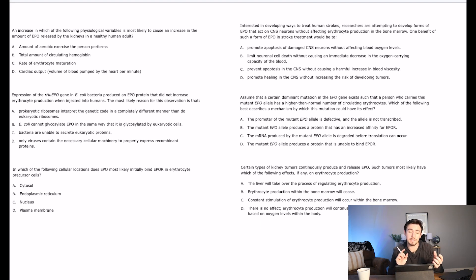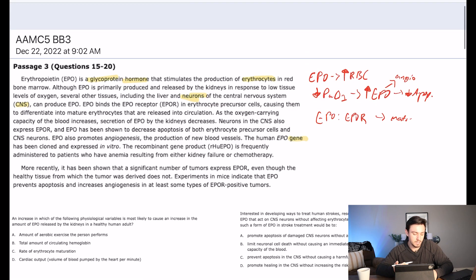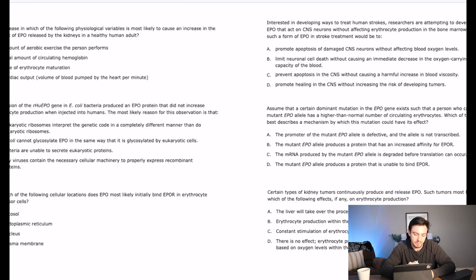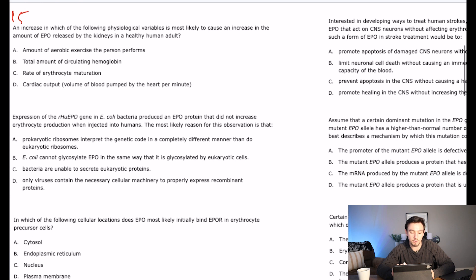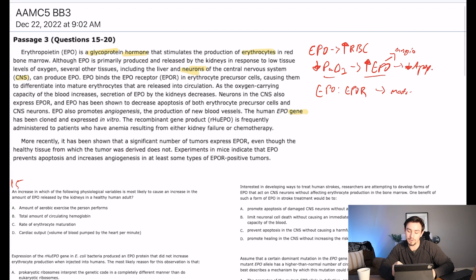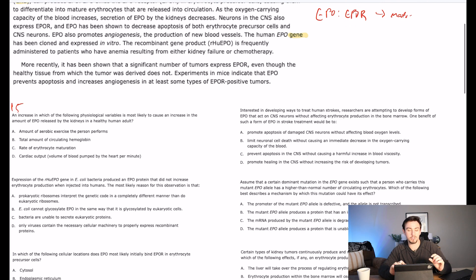So let's take a look at the questions, make sure that we're rephrasing all of them that we can, go through the answer choices, knock out the bad ones, select the good one. So starting with number 15, it says an increase in which of the following physiological variables is most likely to cause an increase in the amount of erythropoietin released by the kidneys in a healthy human adult. Well, our flowchart said that we get erythropoietin when we have low oxygen. So I'm pretty much rephrasing this one as which of these answer choices is low oxygen.